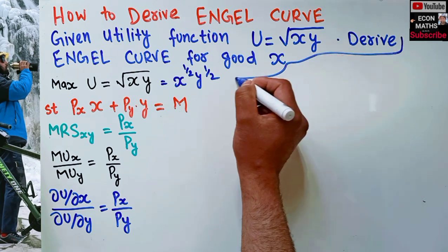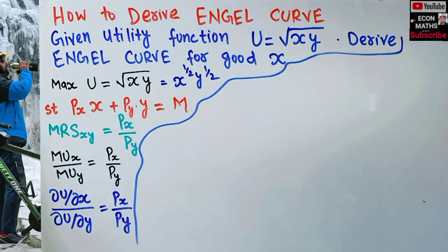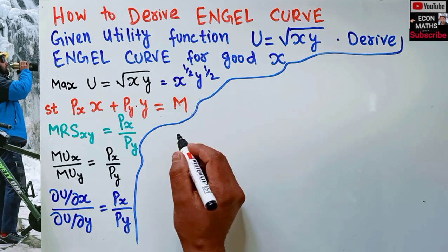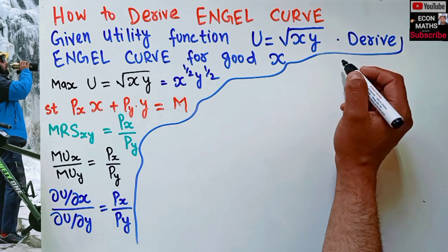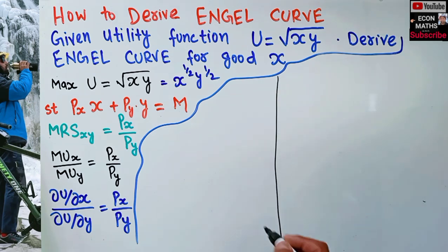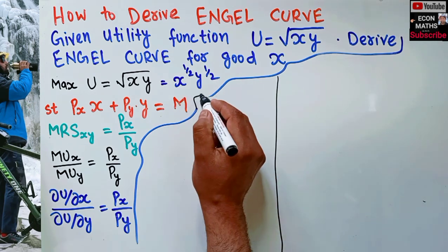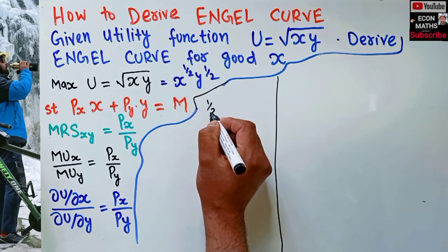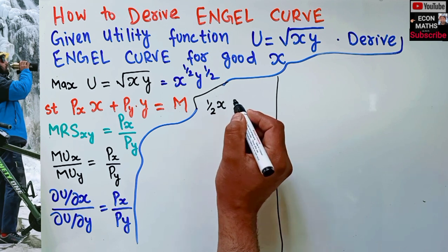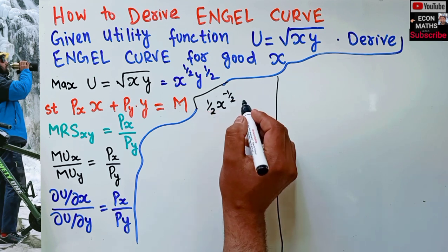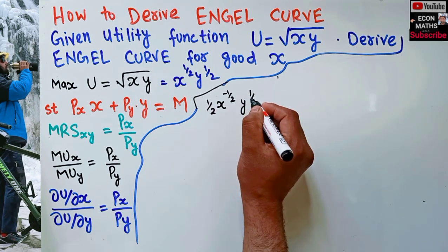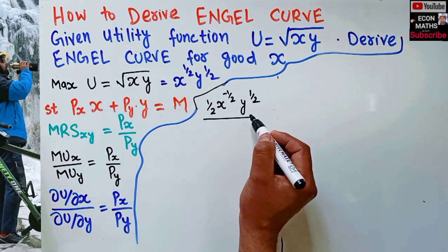So ∂u/∂x means the partial derivative of this function. The derivative of x^(1/2) by the power function rule will be (1/2)·x^(−1/2). So ∂u/∂x = (1/2)·x^(−1/2)·y^(1/2). This is the partial derivative of the utility function with respect to x.